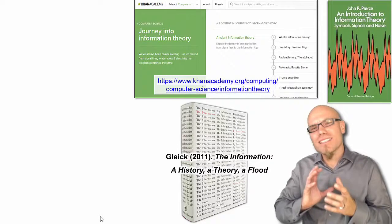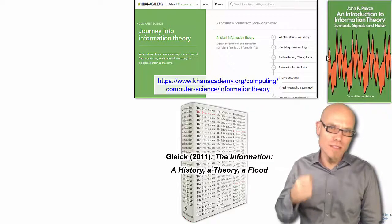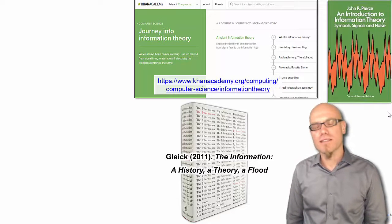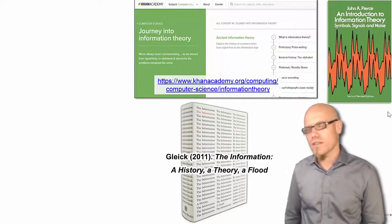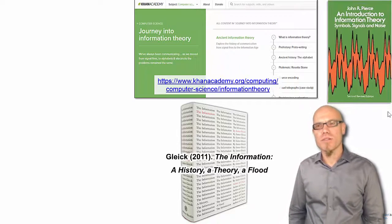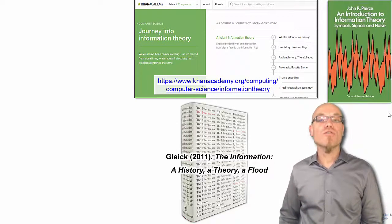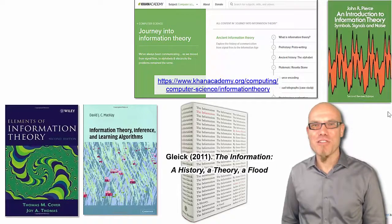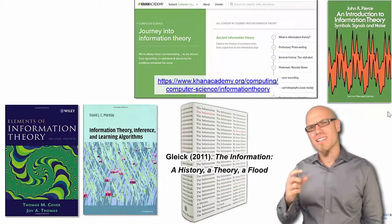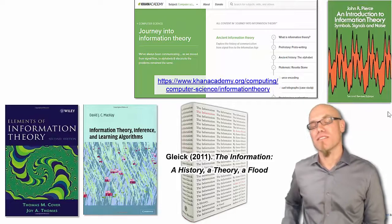There are also some more introductory, slightly more technical courses — for example, on Khan Academy — and this seminal book, still one of the best introductions to information theory: John Pierce's 'An Introduction to Information Theory: Symbols, Signals, and Noise.' There aren't a lot of formulas in it, and even if you skip the formulas you'll still understand the gist. If you really want to understand it deeply, the bibles are Cover and Thomas's 'Elements of Information Theory' and MacKay's 'Information Theory, Inference, and Learning Algorithms' — though these are 600-page books you have to work through.